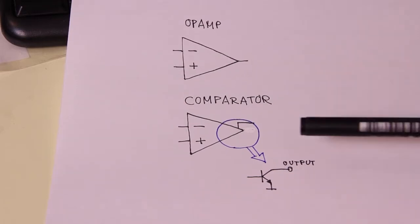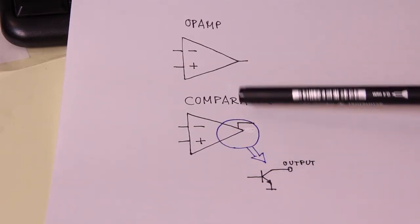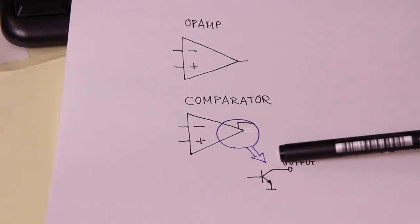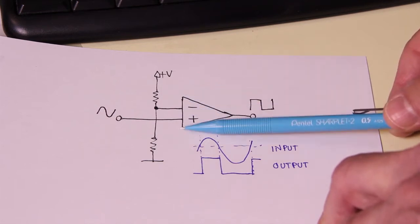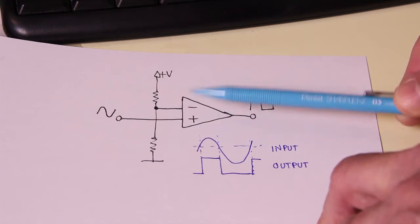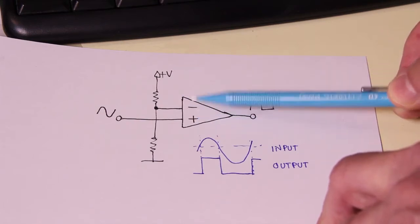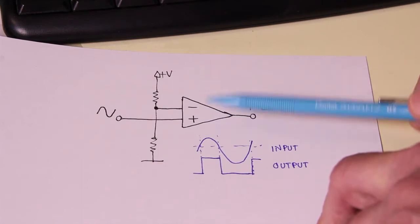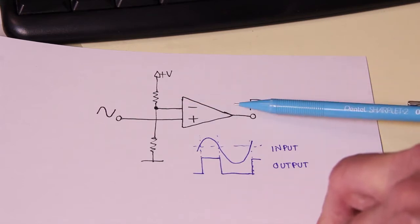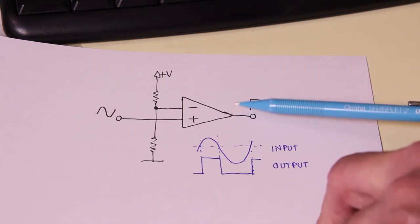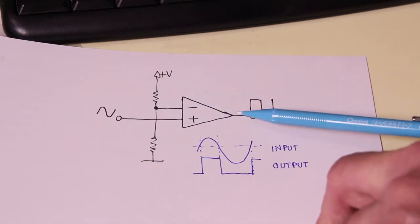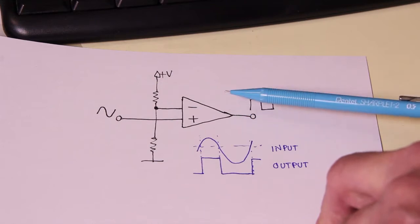Like operational amplifiers, comparators have two differential inputs and one output, but unlike op-amps, comparators are usually not fitted with a push-pull output — they have an open collector output. As the name implies, comparators are used to compare two voltages from their differential inputs. With an operational amplifier you can compare two voltages at the non-inverting positive input and at the negative inverting input, for example to make a voltage detector exploiting their high gain. However, this can only be done for low-speed applications, because with no feedback resistor, op-amps in open loop are quite slow.